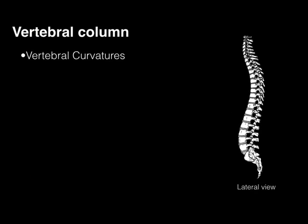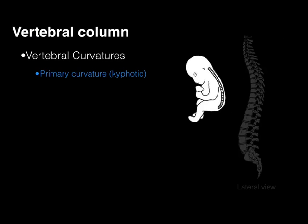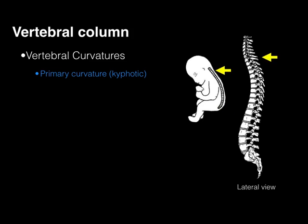The vertebral column has primary and secondary curvatures. The primary curvature is the C-shaped curve seen in the fetal position — it's called 'primary' because it's the first curve to develop. This curvature is retained in the thoracic region of the adult vertebral column and is referred to as the primary curvature.